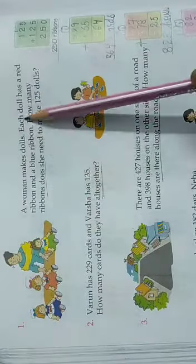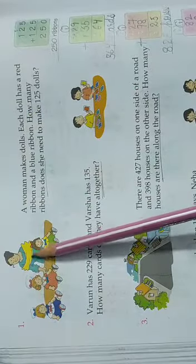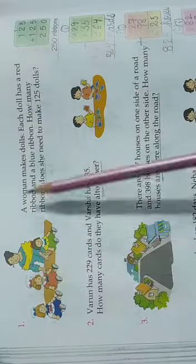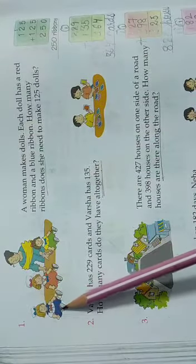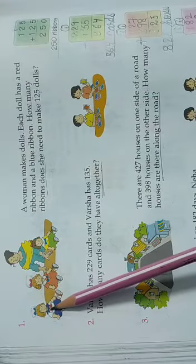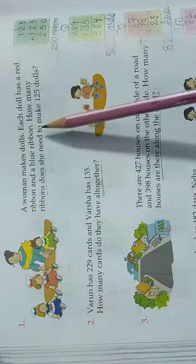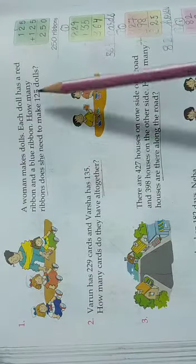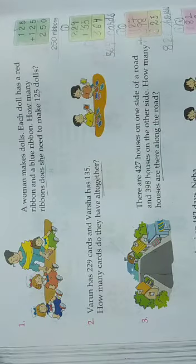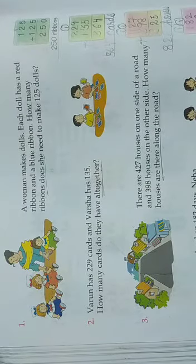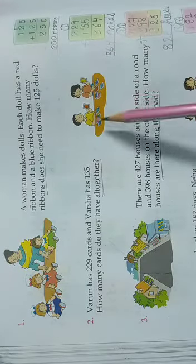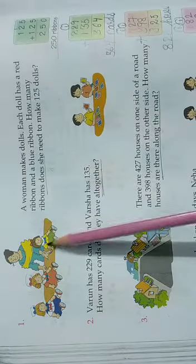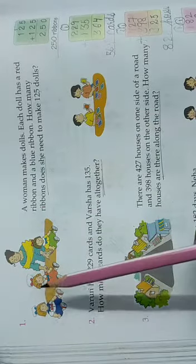Let us see the first one. A woman makes dolls. We can see a woman here and what she makes - she makes some dolls. Each doll has a red ribbon and a blue ribbon. If you observe the dolls carefully, we can see a red ribbon and a blue ribbon also.